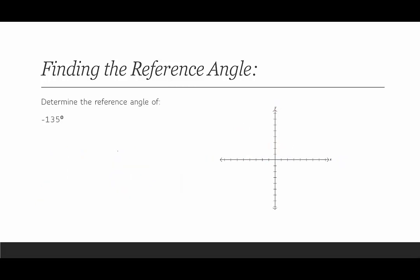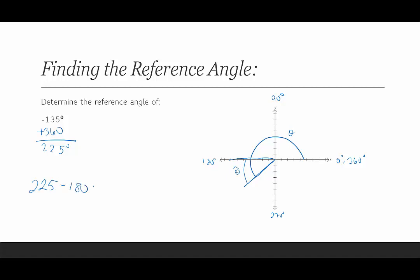For negative 135 degrees, I suggest converting it to an angle between 0 and 360 by adding 360. Negative 135 plus 360 gives a coterminal angle of 225 degrees. 225 degrees terminates in quadrant 3, maybe right there. Theta hat is along the negative x-axis and the terminal side. So: 225 minus 180 equals 45. The reference angle of negative 135 degrees is the same as 225 degrees, which is 45 degrees.